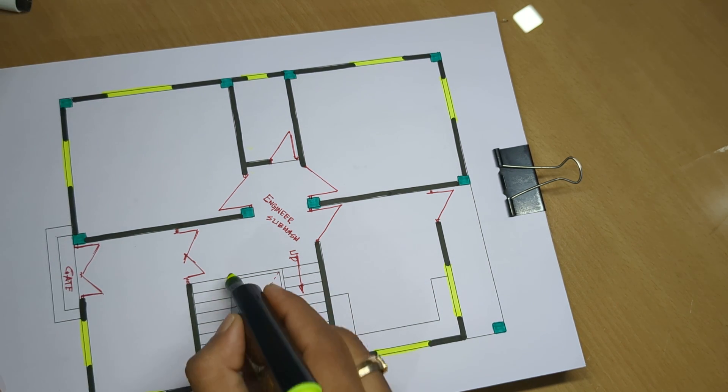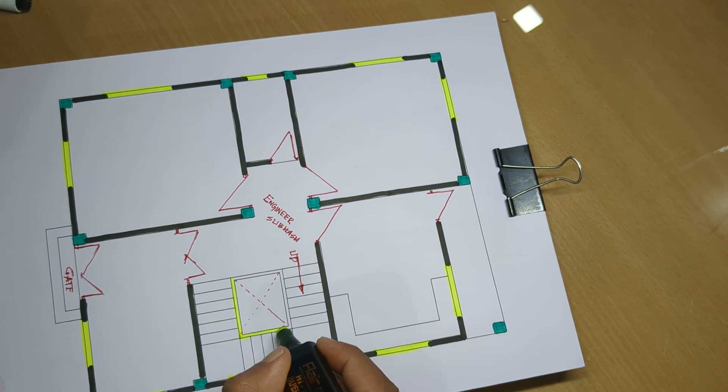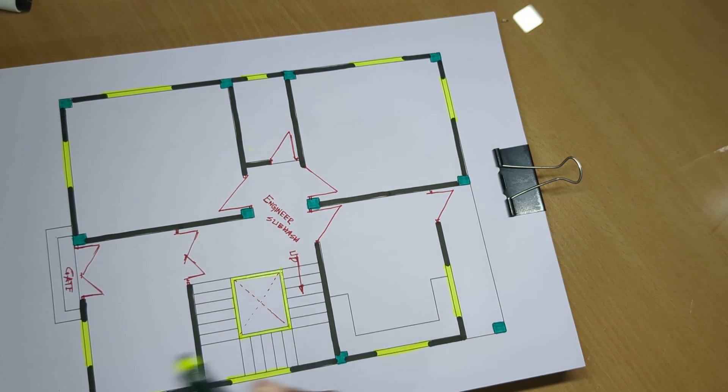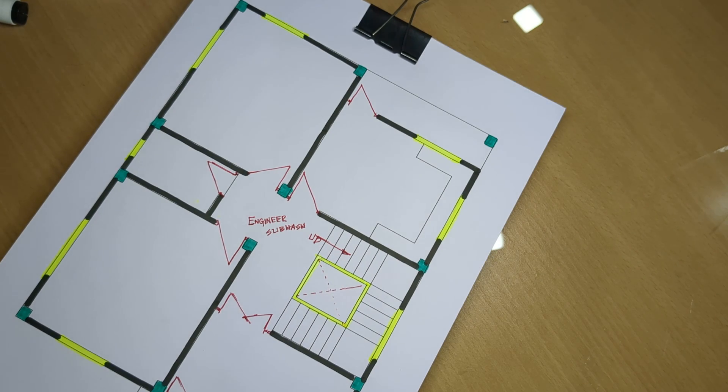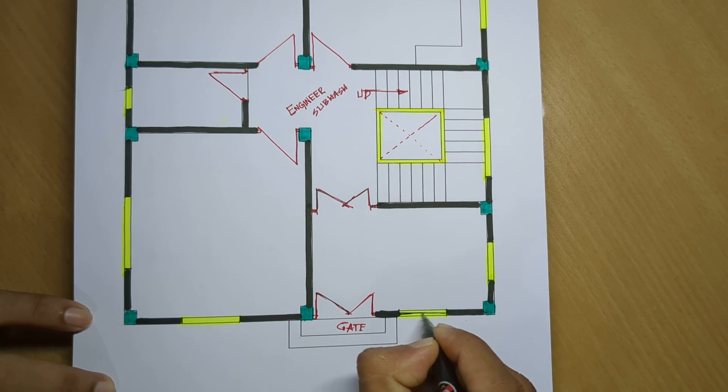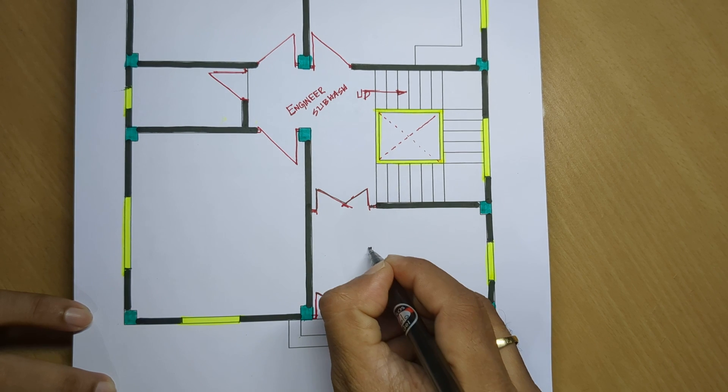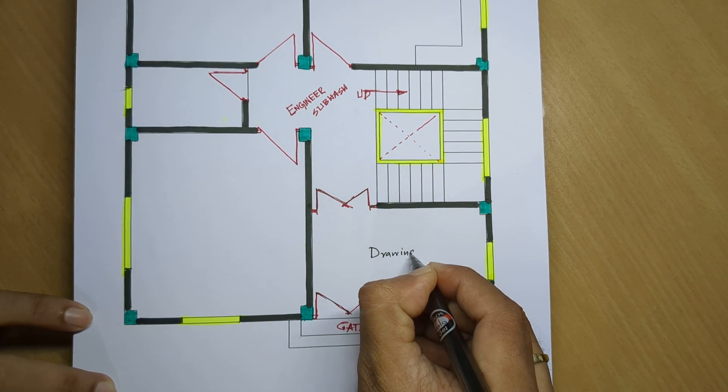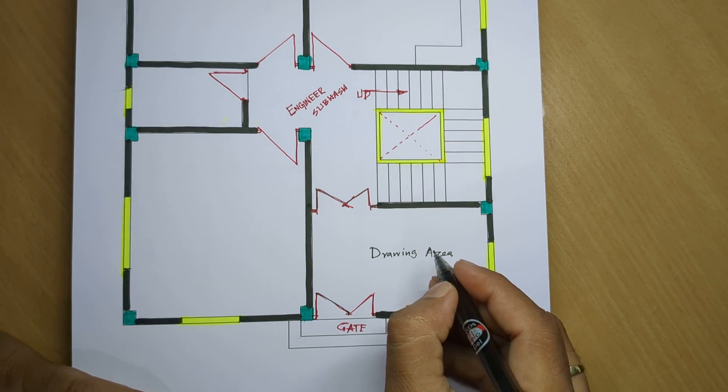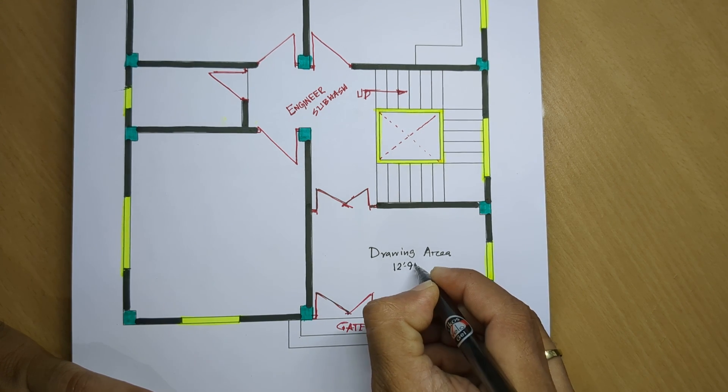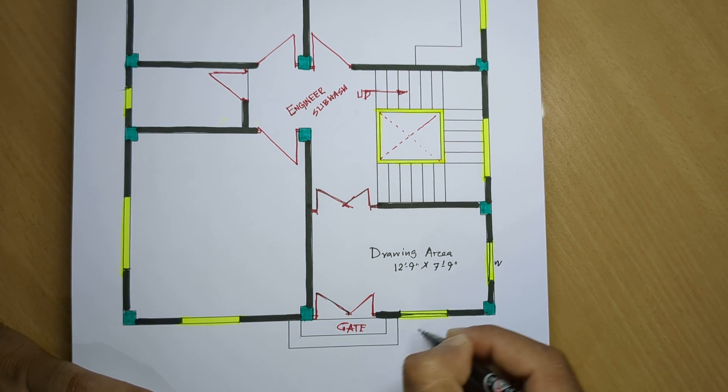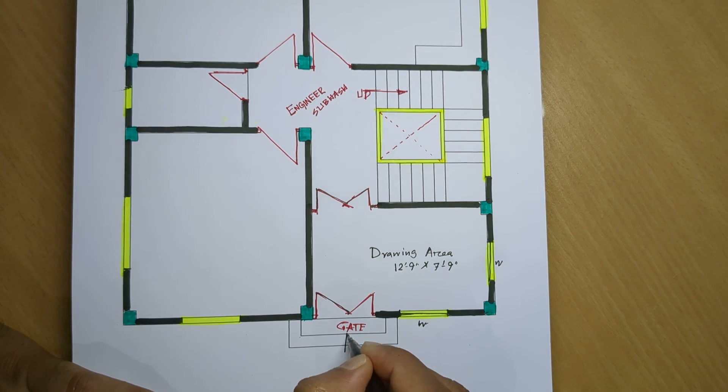Drawing area dimensions are 12 feet 9 inches and 7 feet 9 inches with a window. Next is the gate entry.